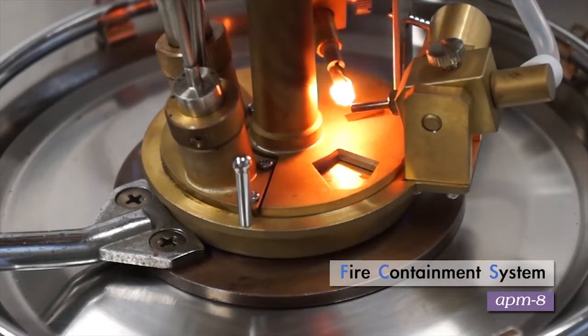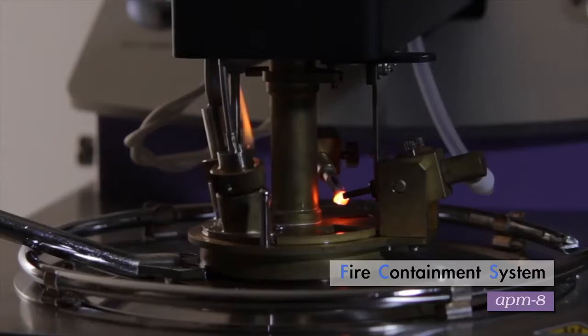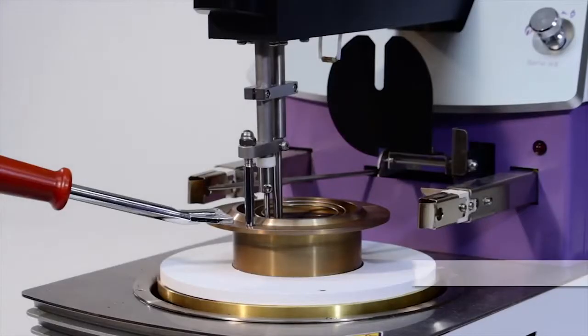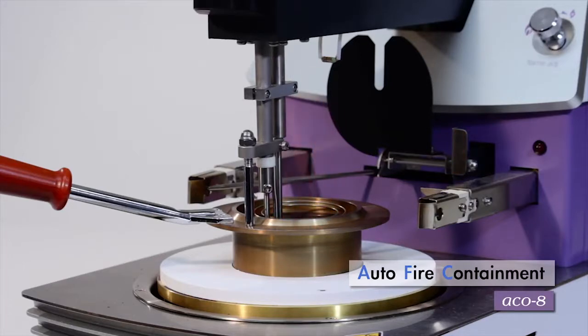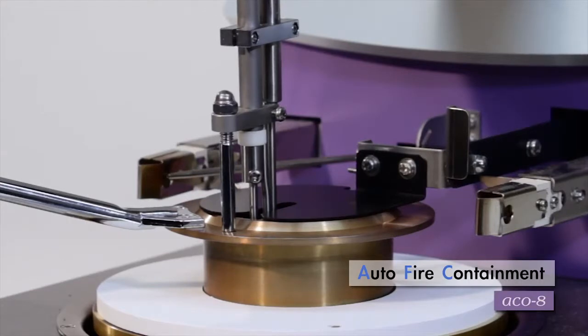Newly added on the Penske-Martin's closed cup model is a fire containment system using nitrogen gas. On the Cleveland Open Cup model, the fire containment lid activates automatically to help extinguish fires when a specimen sustains burning.